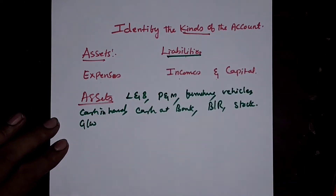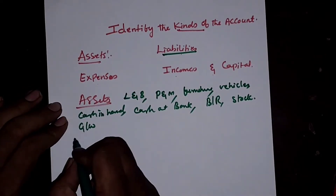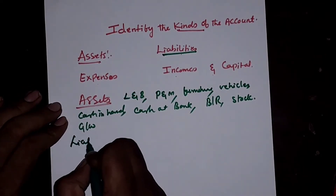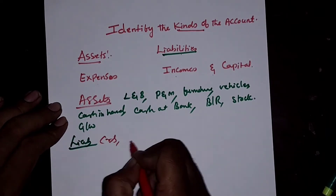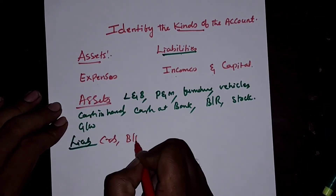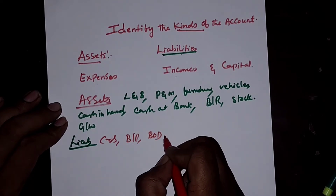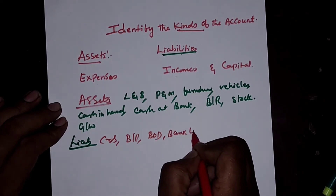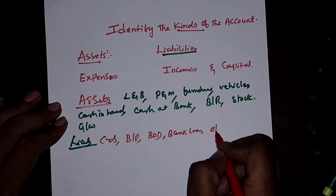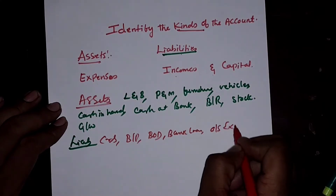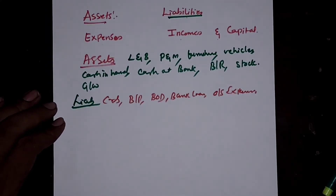Next, Liabilities. Liabilities include Creditors, Bills Payable, Bank Overdraft, Bank Loan, and Outstanding Expenses.